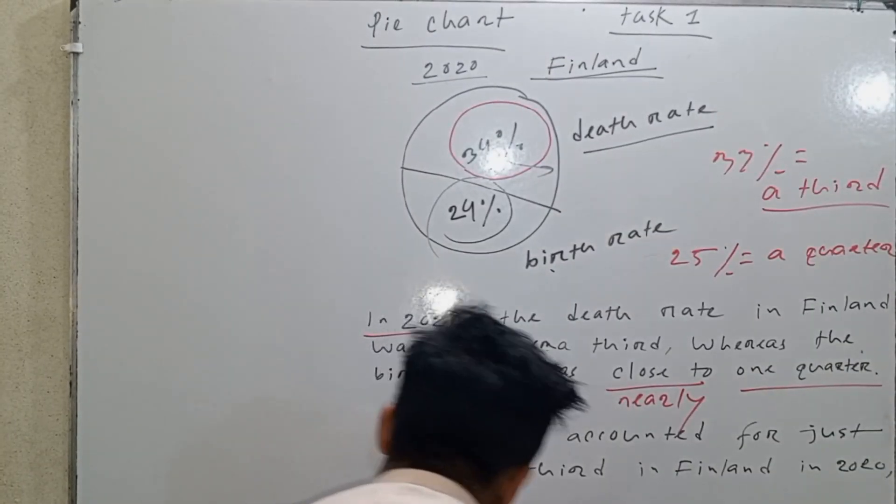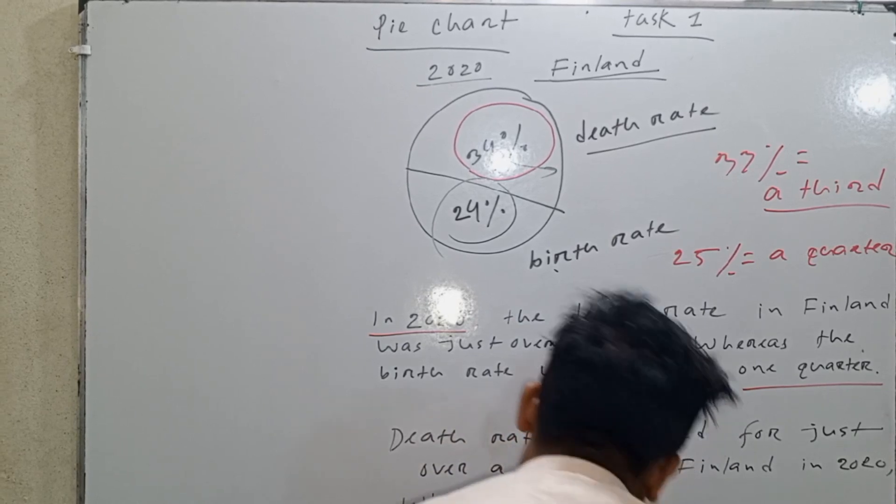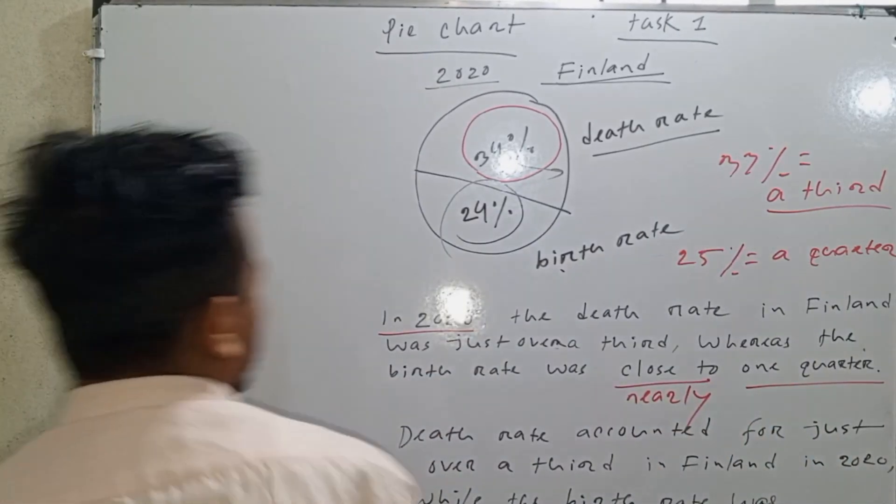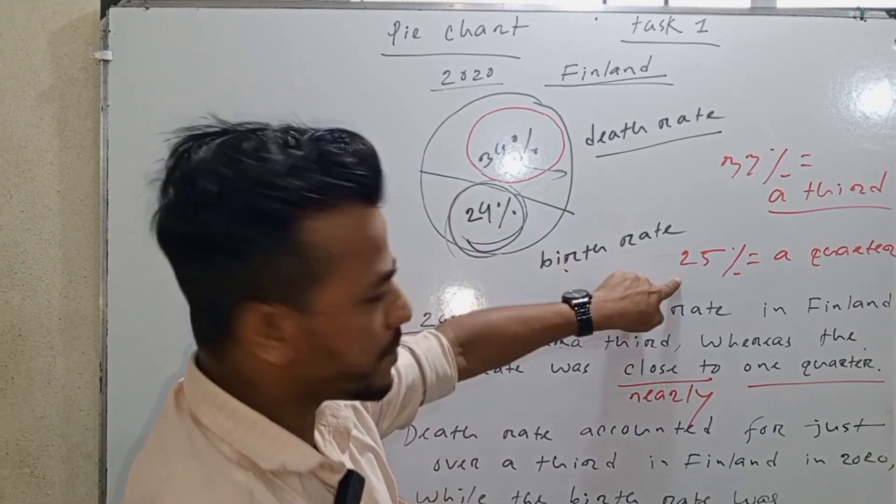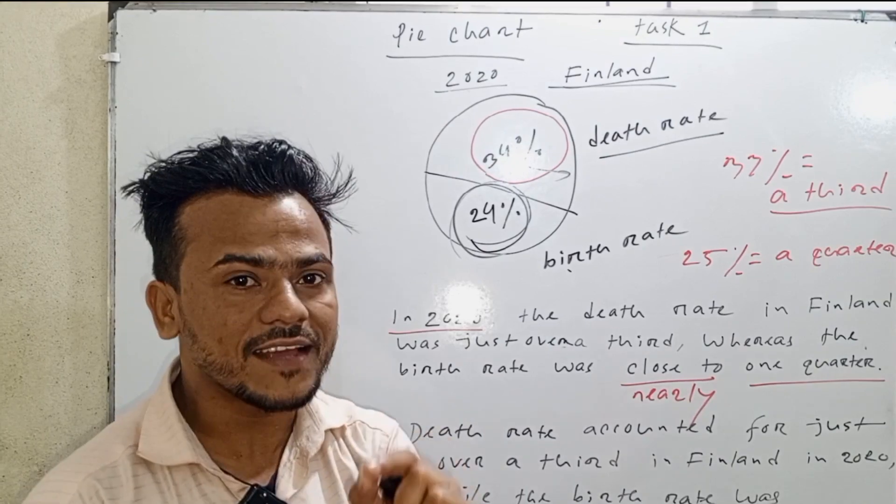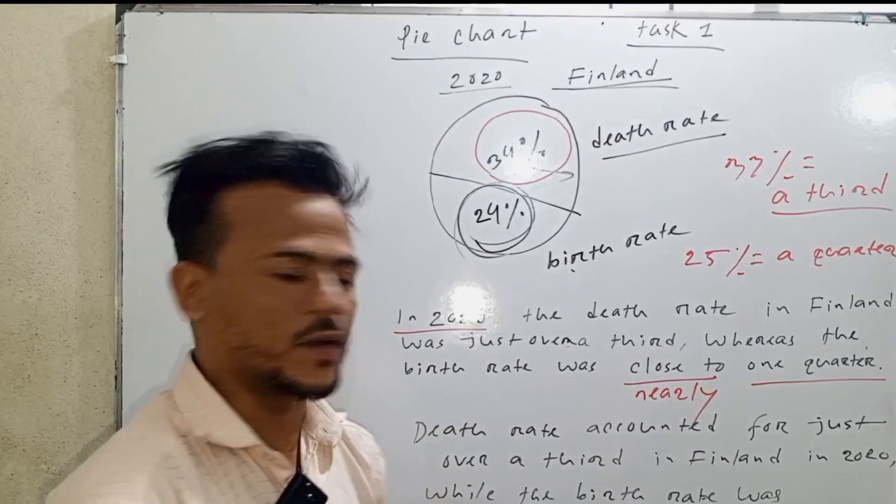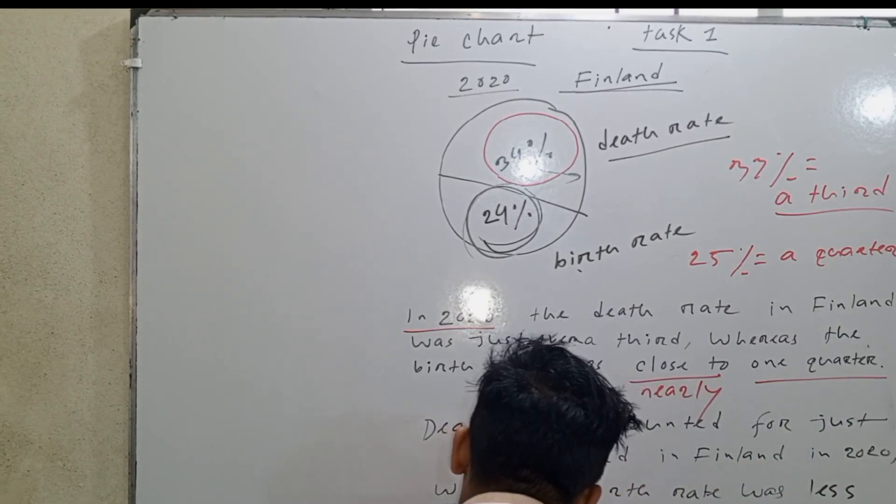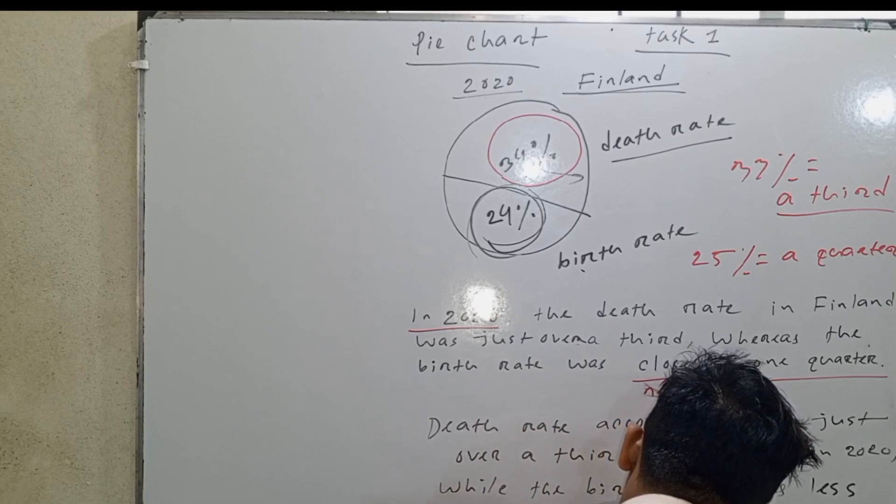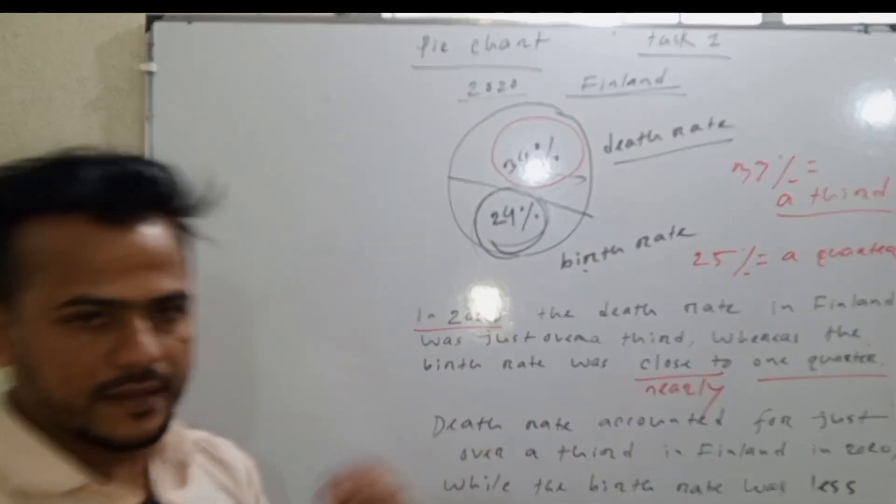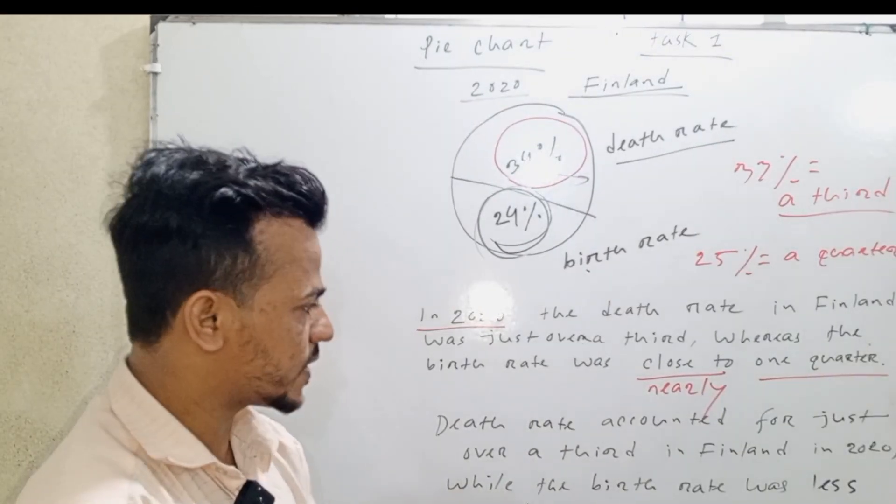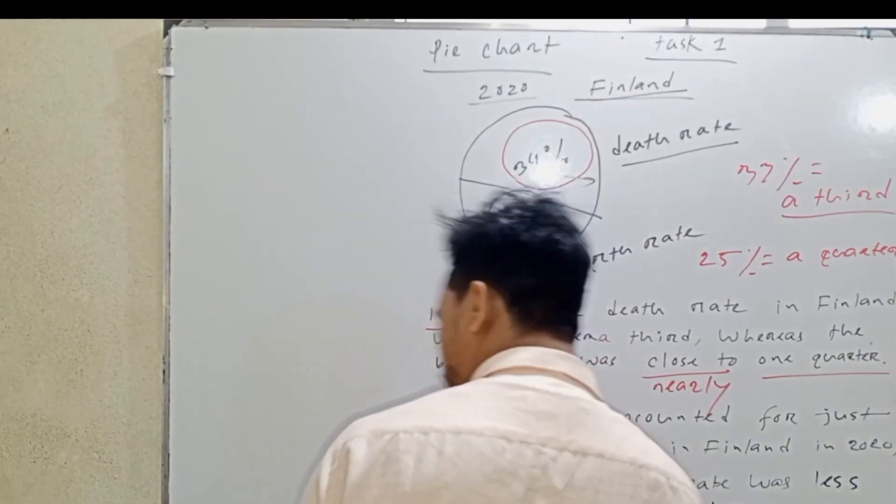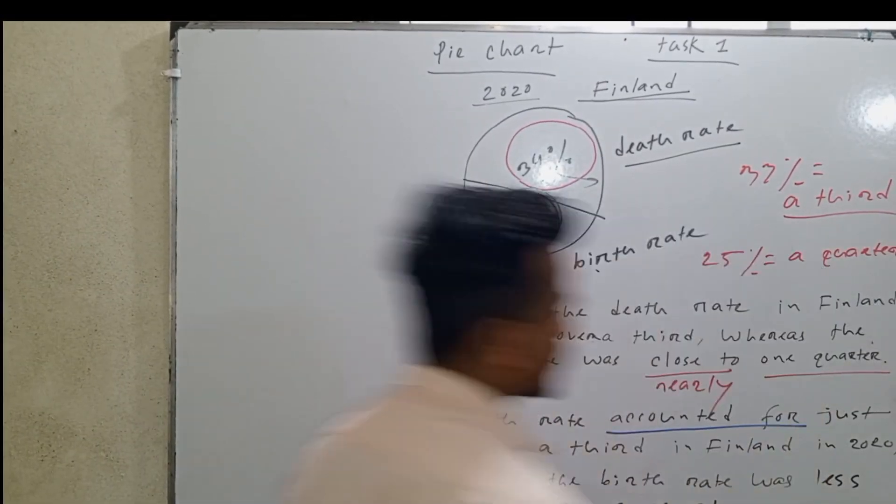In Finland, in 2020, whereas a complex sentence, the birth rate was 24 percent. 25 percent means a quarter. I could say nearly a quarter or less than a quarter. While the birth rate was less than a quarter. This is a good complex sentence with less common language.